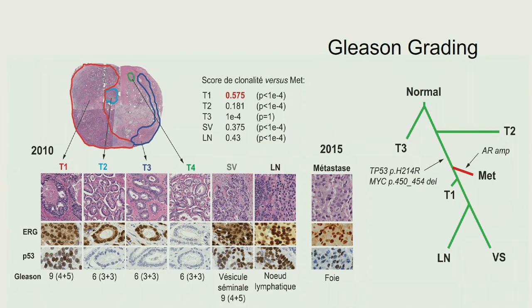Going back to biopsies where we see different amounts of tumor in different grades — and looking at an example of a prostatectomy — we have areas with different Gleason grades and different patterns of growth. The tumor may look different, with different molecular alterations. For example, one area does not have a gene fusion, whereas others do. P53, associated with more aggressive disease, is altered in some samples but not all. We also have patients who, many years after initial prostatectomy, go on to metastasize. Heterogeneity is obviously a very important topic in prostate cancer.